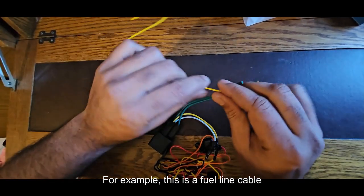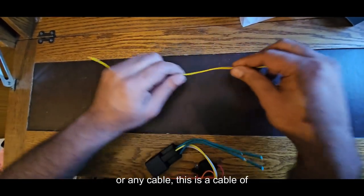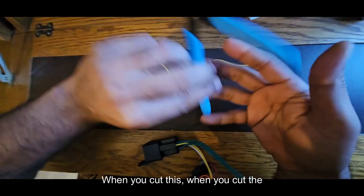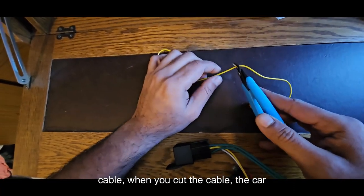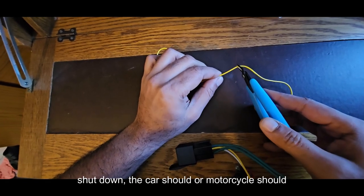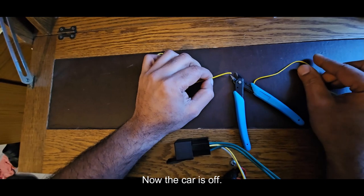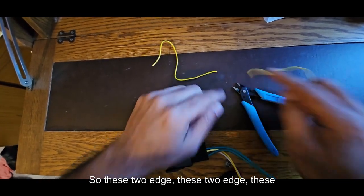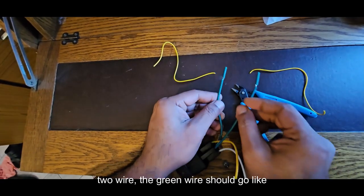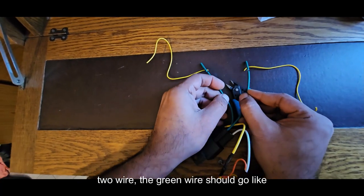For example, this is a fuel line cable or any cable. This is a cable of the car. When you cut this cable, the car shuts down. The car or motorcycle should shut down. You see, now the car is off. So these two edges, the green wires should go like this.